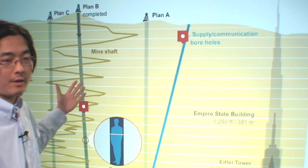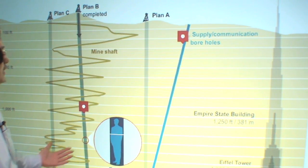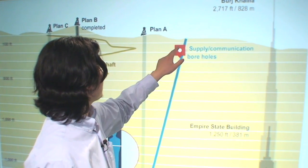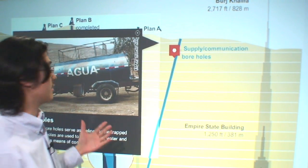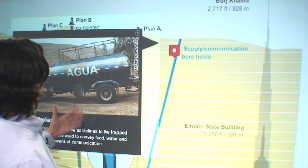This is a diagram of the mine accident in Chile. There's a photo here, so I can just touch this, and then there's the photo. You can talk about it. This is the truck that brings water to the workers.